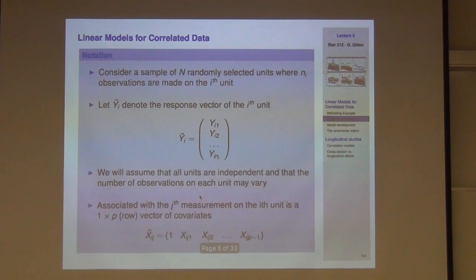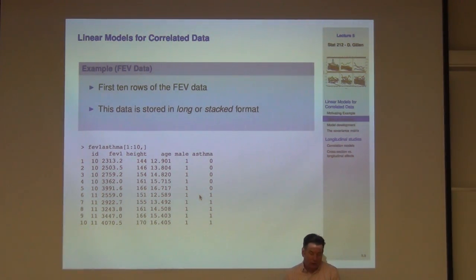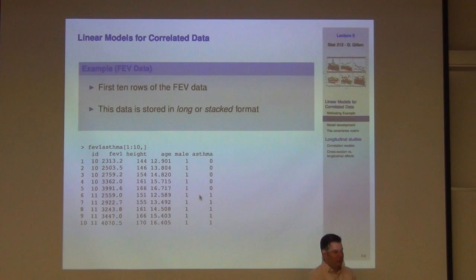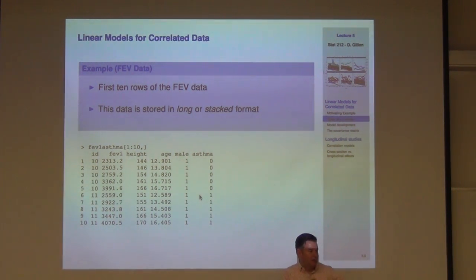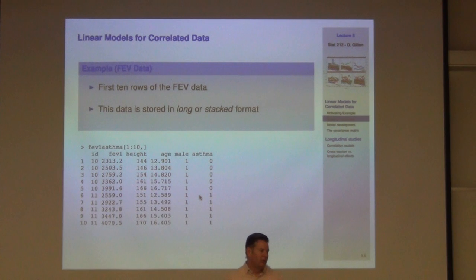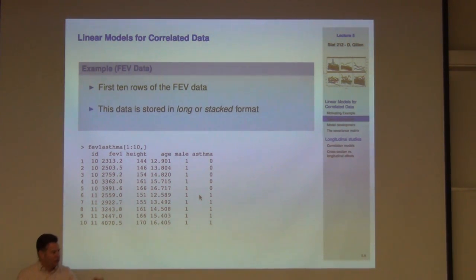For this dataset, age gives us a sense of when the measurement was made — what would be the time in the study. Similarly for spatial data you'd think about longitude and latitude. For longitudinal data, the goal is usually to relate time back to the response of interest, so you need some indication of time of measurement. We can take age at baseline and use the difference in age as we go through as our time scale.